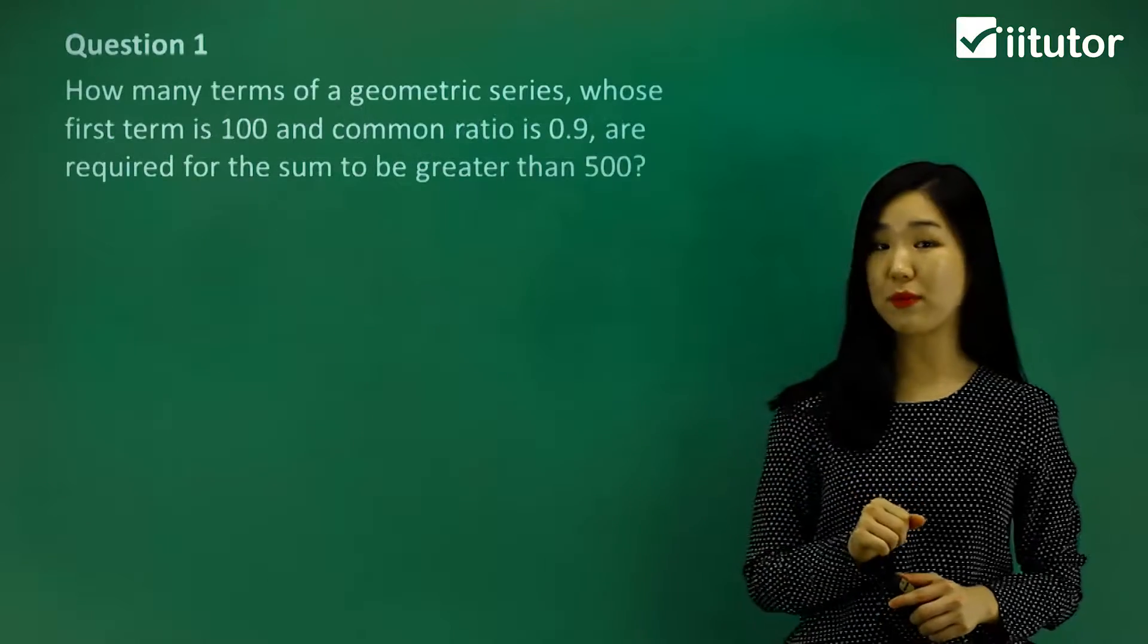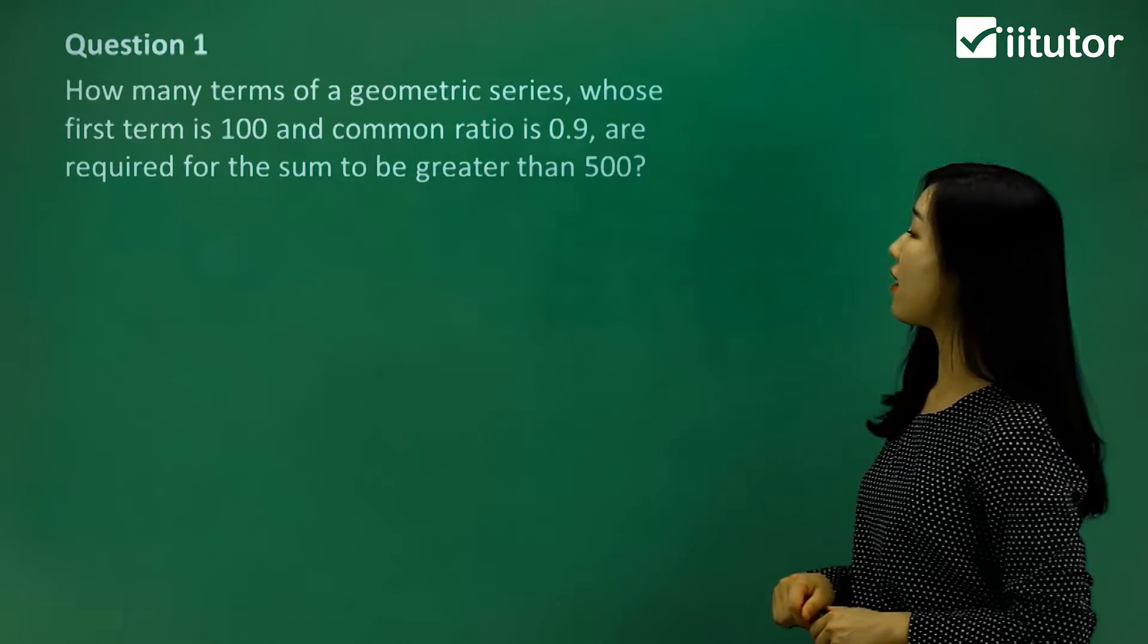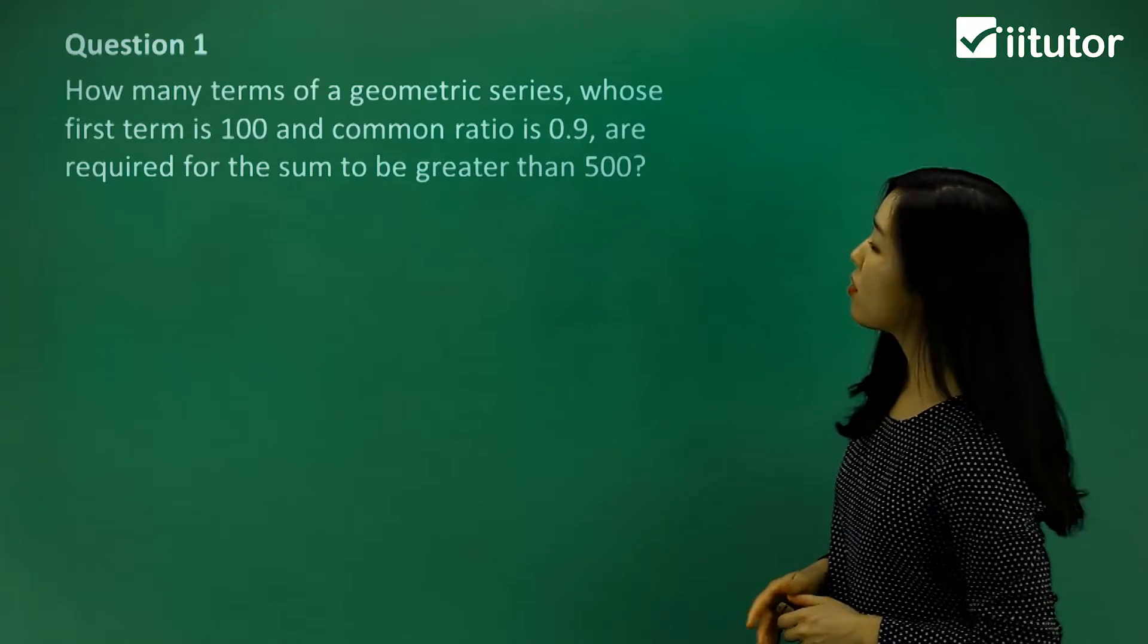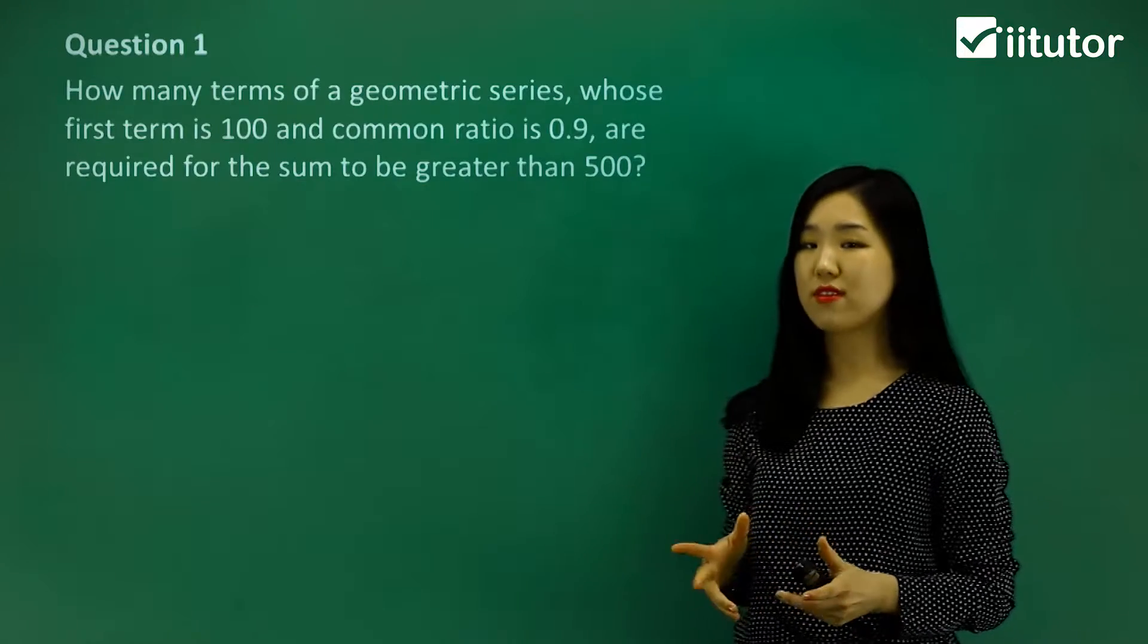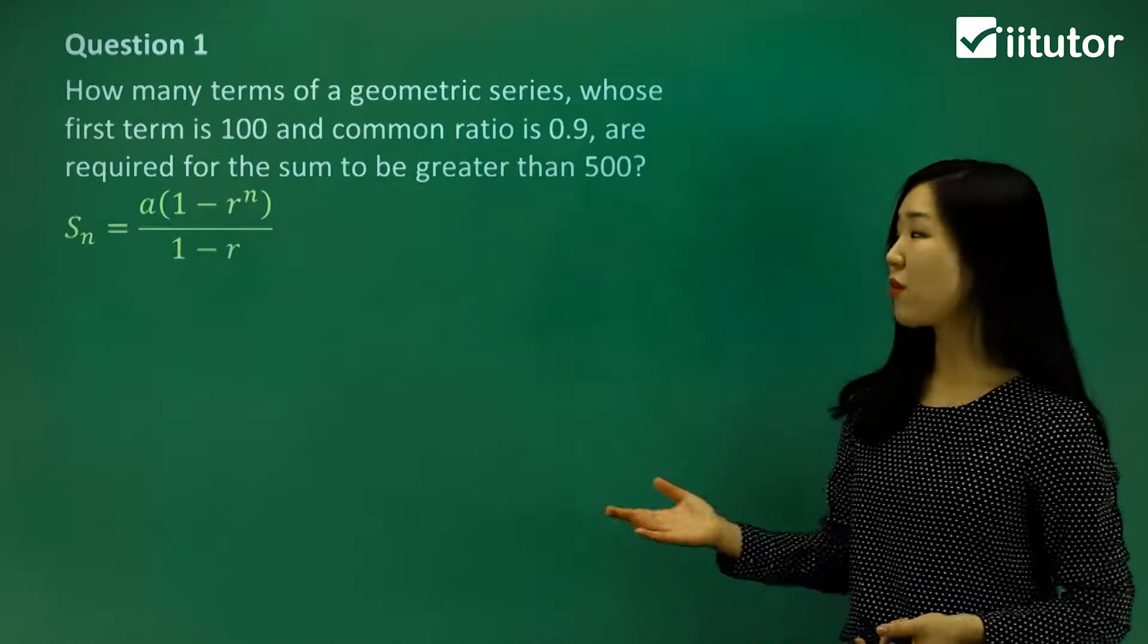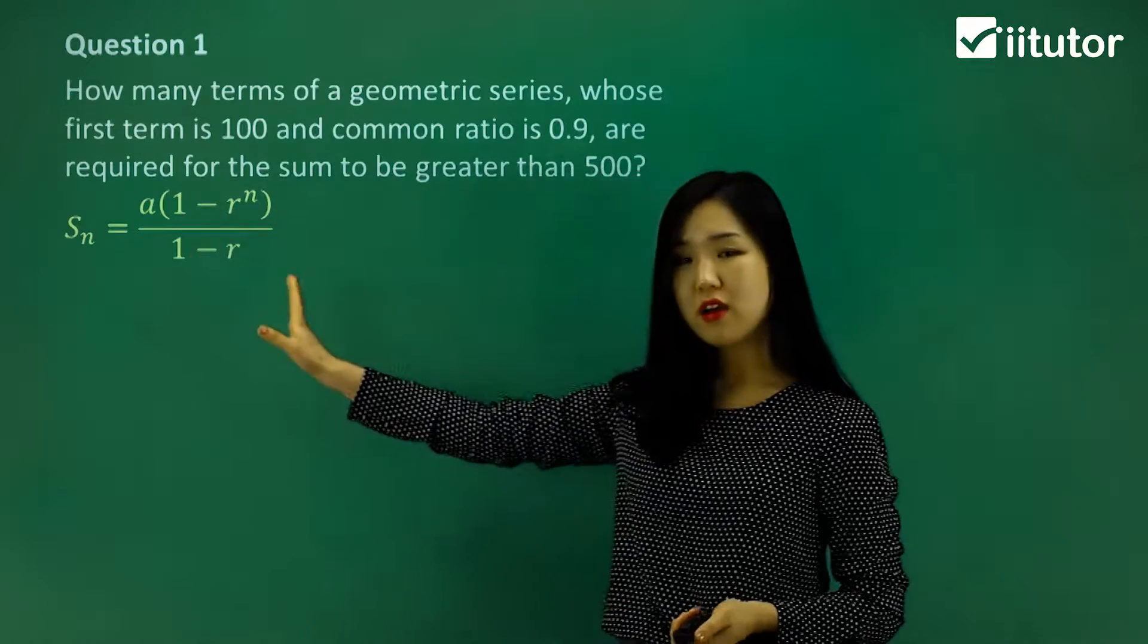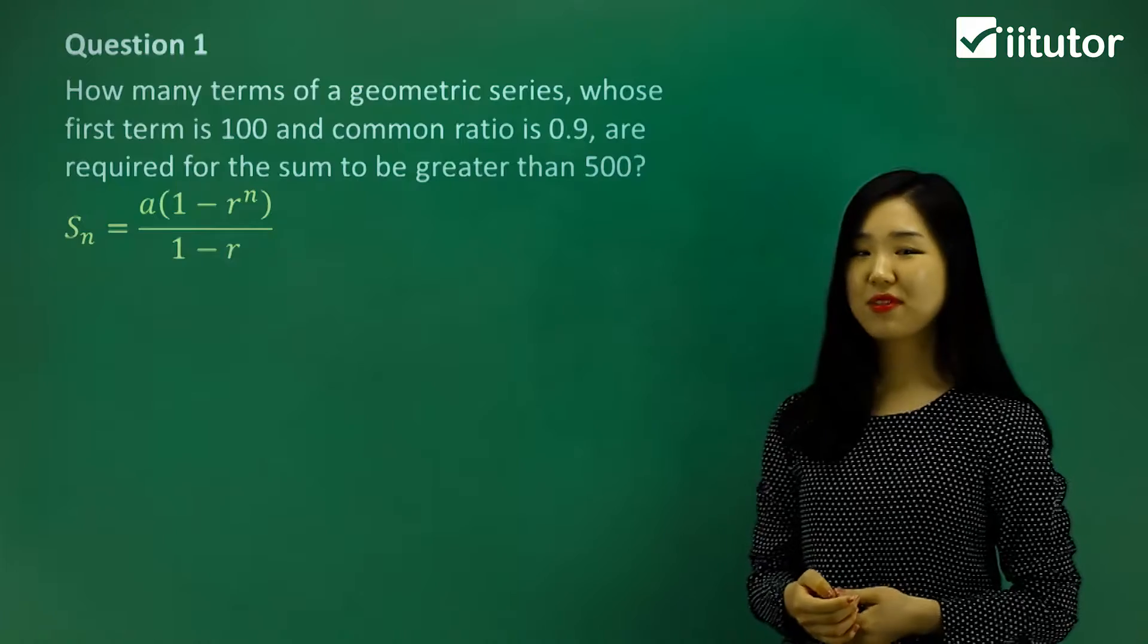Let's go straight to our application question. Question 1 is asking us how many terms of a geometric series whose first term is 100 and a common ratio is 0.9 are required for the sum to be greater than 500. So we have to use the sum formula. I'm going to use this version of the sum formula where I have 1 minus r to the power n, which means the denominator should also be 1 minus r. But if you use the other one, either way is fine.